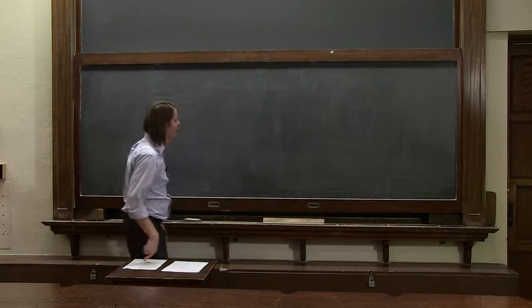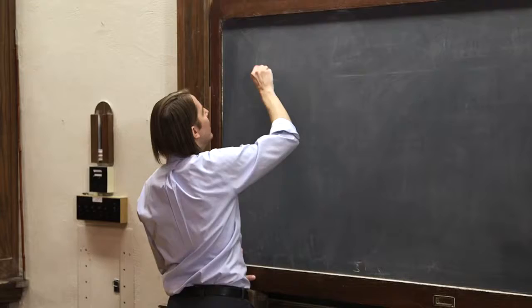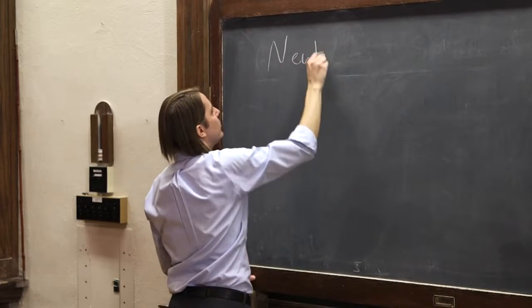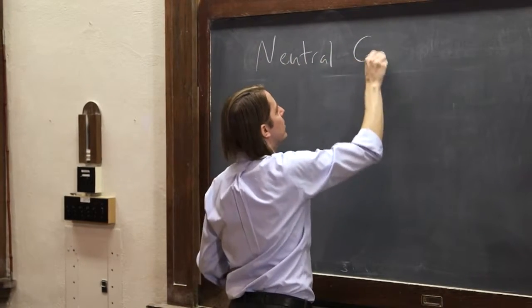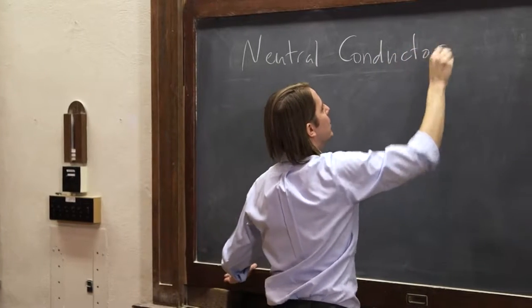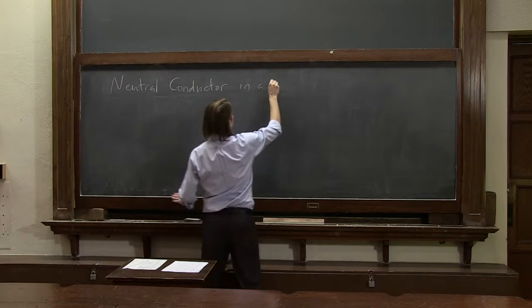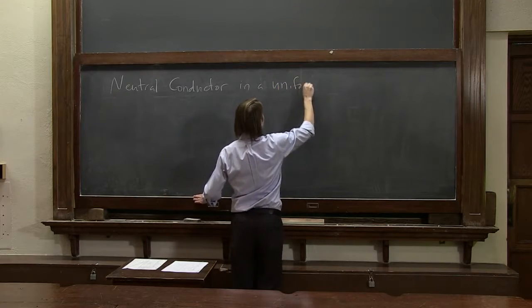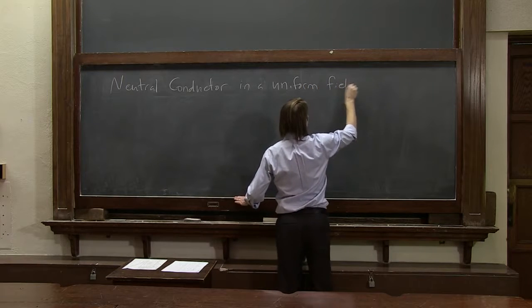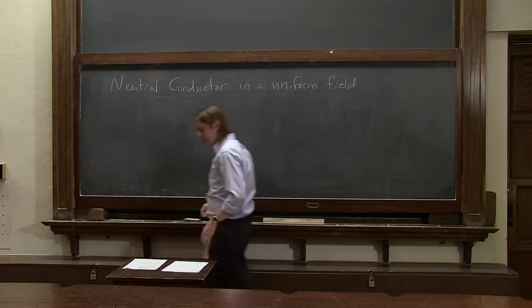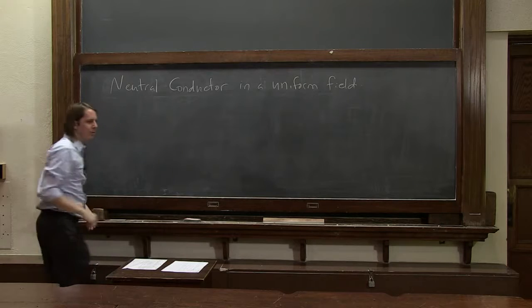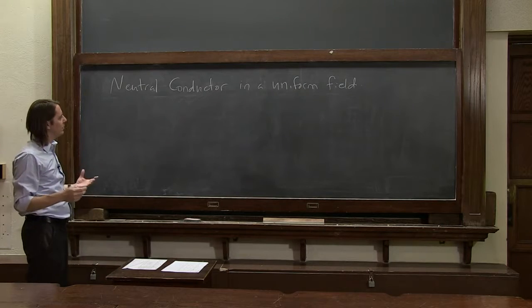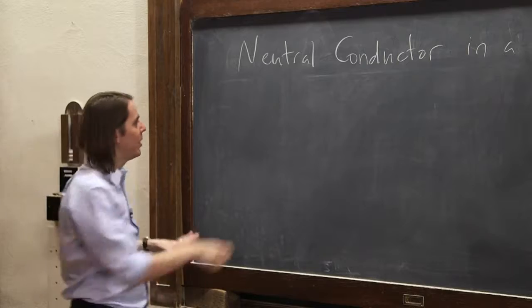Conductors. Let's think back to conductors, neutral conductors, like a Swiss conductor in a uniform field. A neutral conductor in a uniform field. Let's think about what would happen, because remember what was special about conductors is that charges are allowed to move.